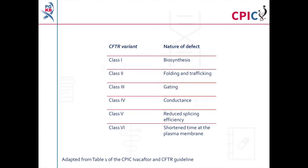Variants in the gene CFTR can lead to the production of defective CFTR proteins, which are unable to transport chloride ions out of cells and ultimately cause cystic fibrosis. CFTR variants which cause cystic fibrosis can be categorised into different classes by the nature of the defect that they cause to the CFTR protein.